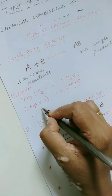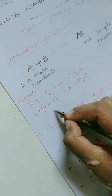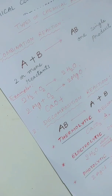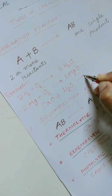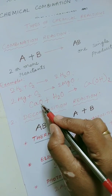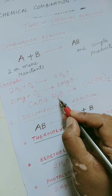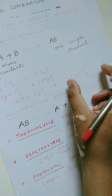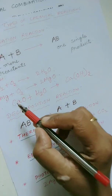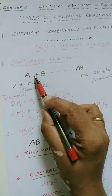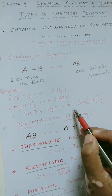For example, calcium oxide combines with water to form calcium hydroxide. Calcium oxide is a compound and water is also a compound. Both the compounds are combining to form a different product — a different compound. So, two compounds forming a single product: it's a combination reaction. Hope you understood this, children.